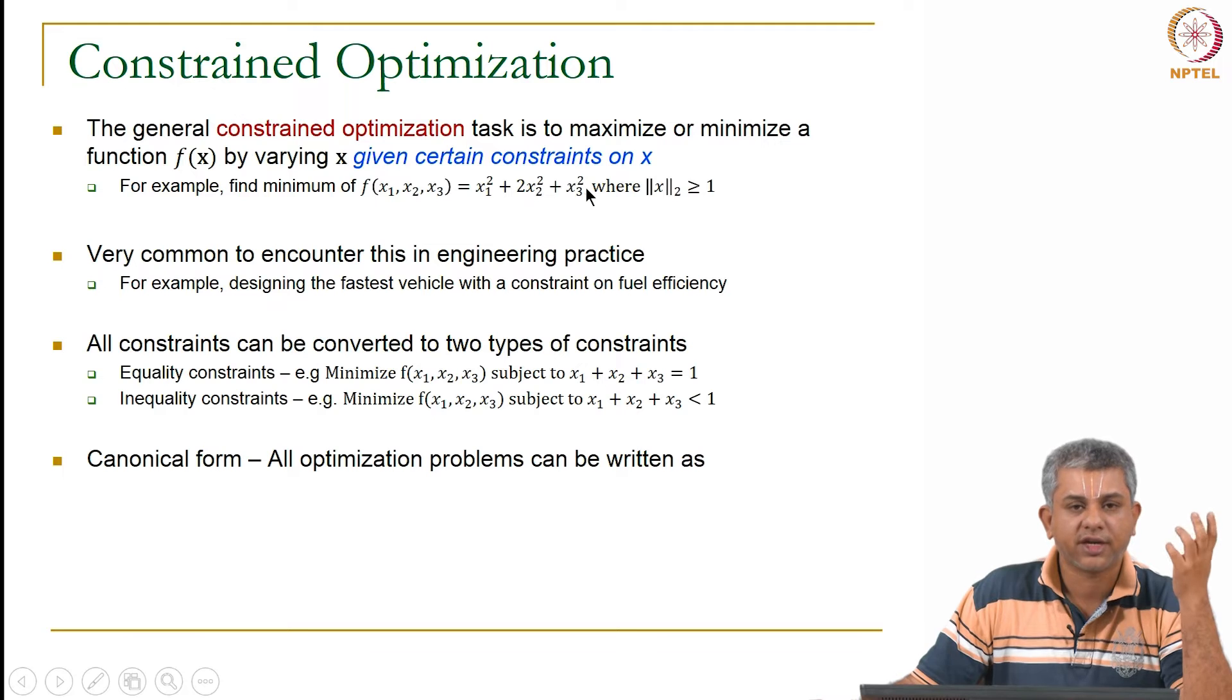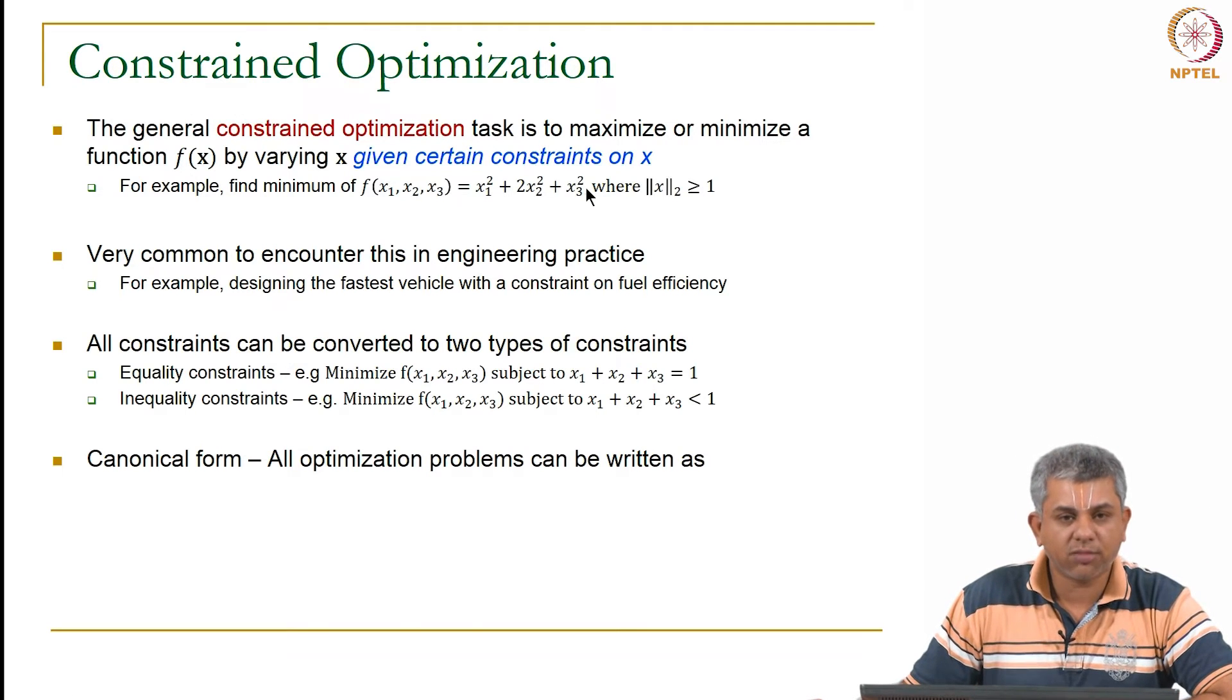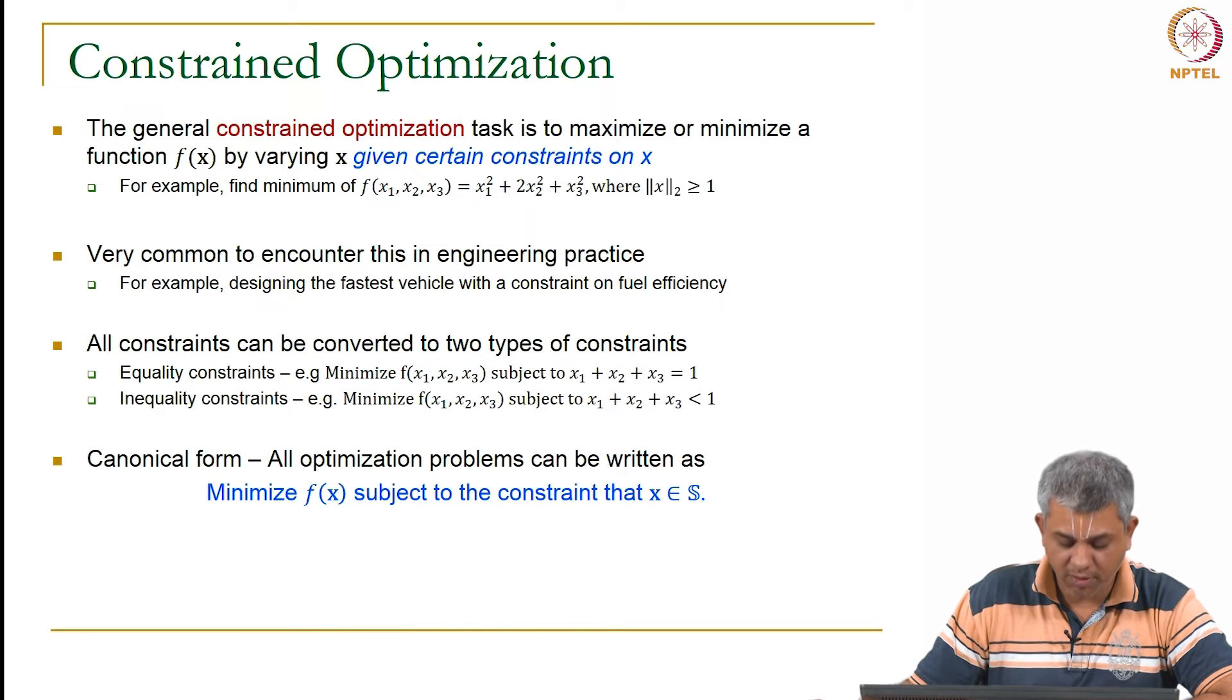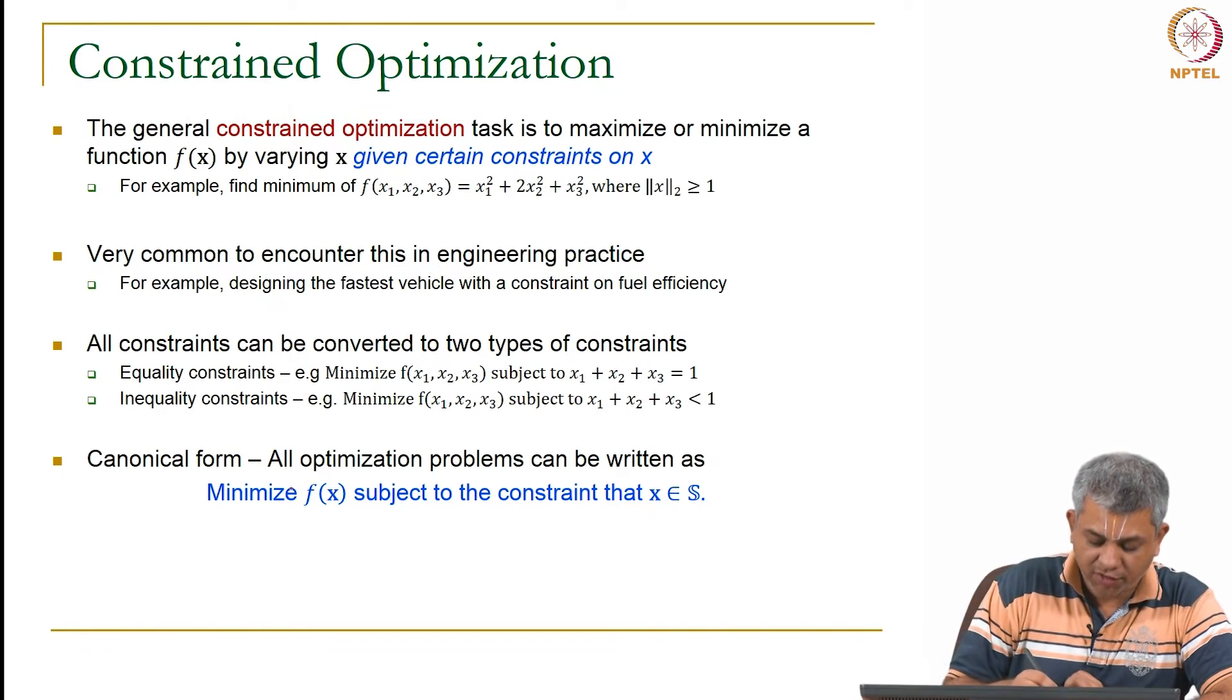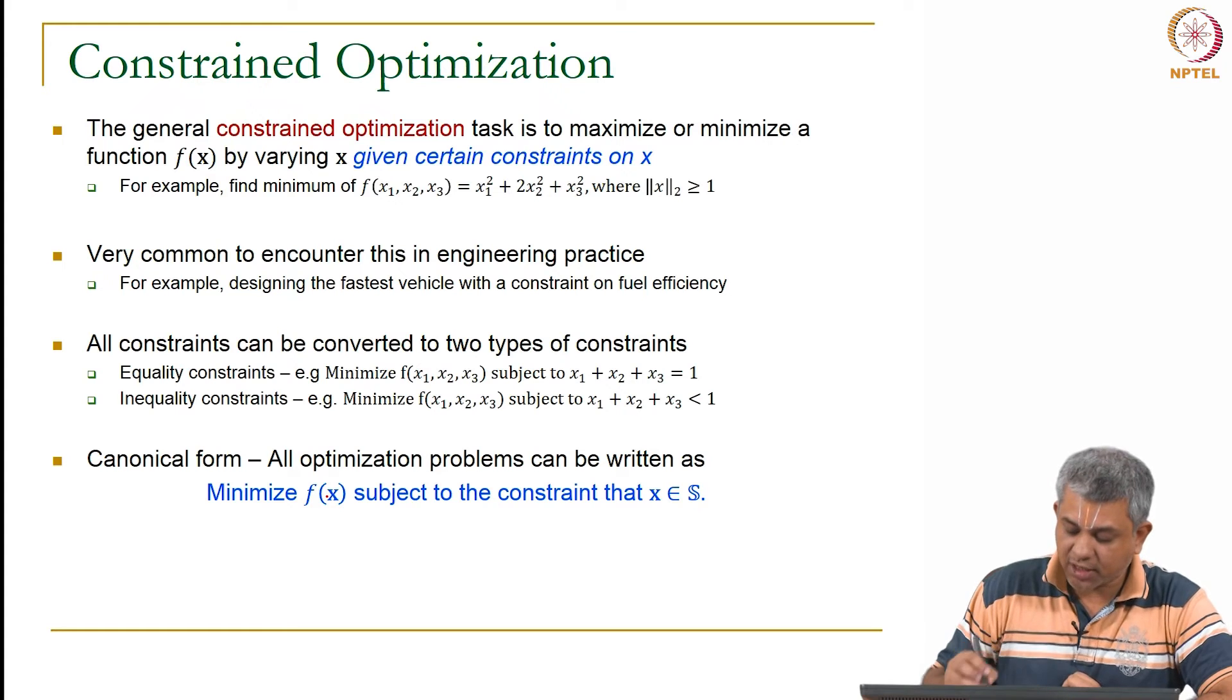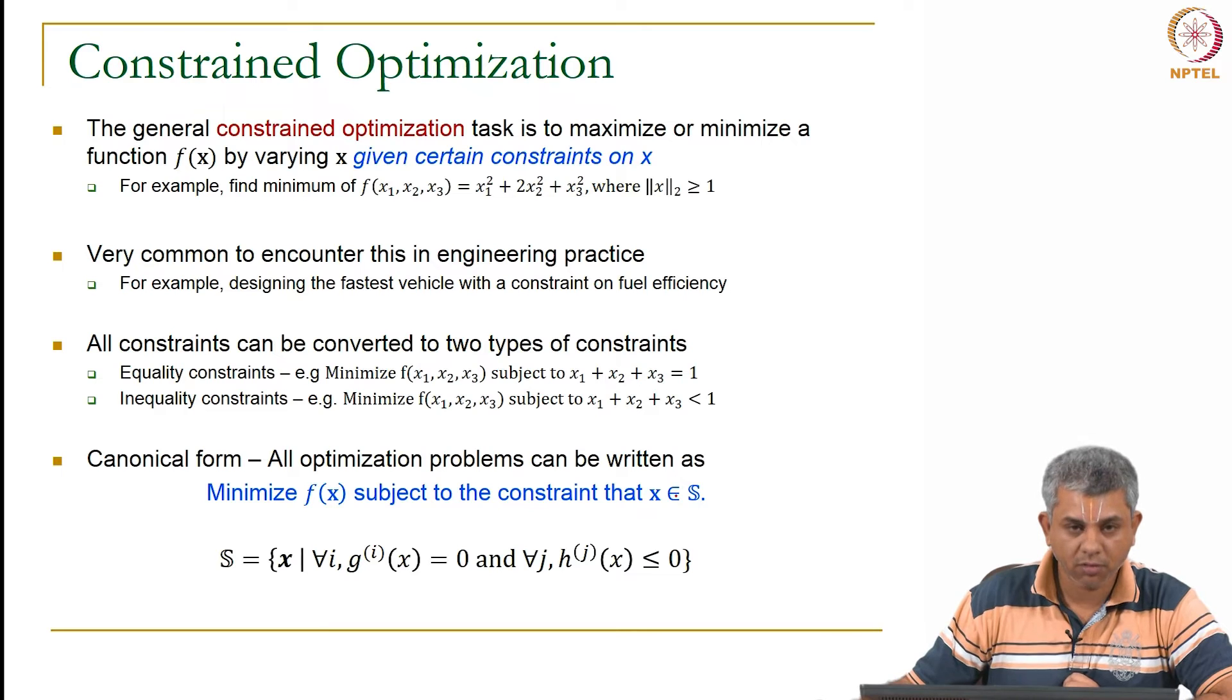Now we come to something called the canonical form. Just like all optimization problems could be written as minimization problems, it turns out all constrained optimization problems can be written in a particular way. The overall expression is very simple: minimize f(x) subject to the constraint that x belongs to a given set s.